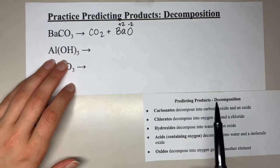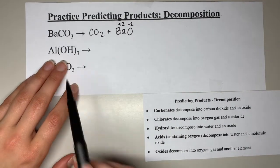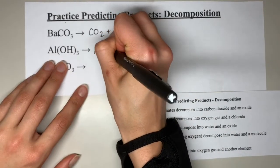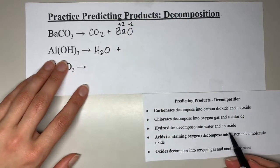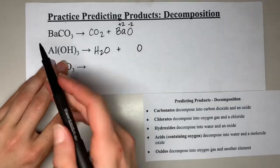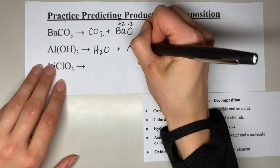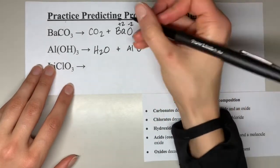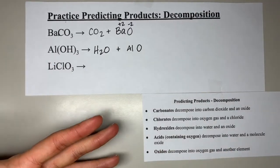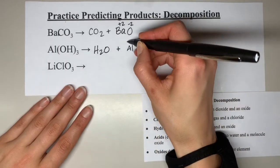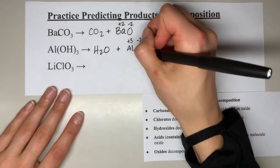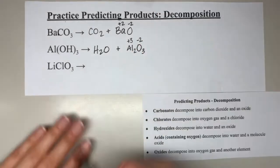The next one is aluminum hydroxide. Hydroxides decompose into water, so H₂O is one product, and an oxide — something bonded to oxygen. In this case it's going to be aluminum. We crisscross: aluminum is +3, oxygen is −2. When we crisscross, we get Al₂O₃.